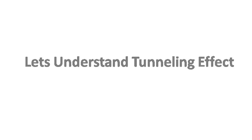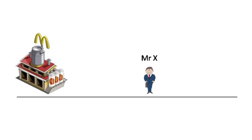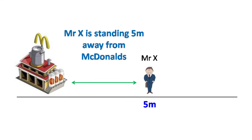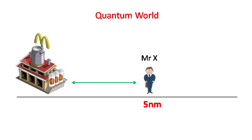Let's try to understand this with an example. Suppose Mr. X is standing in front of McDonald's. Let's say the precise location of Mr. X is five meters away from McDonald's. Now let's assume that we are in a quantum world and the dimension of everything around us is in nanometers. In this case, it's very difficult to say the exact position of Mr. X.